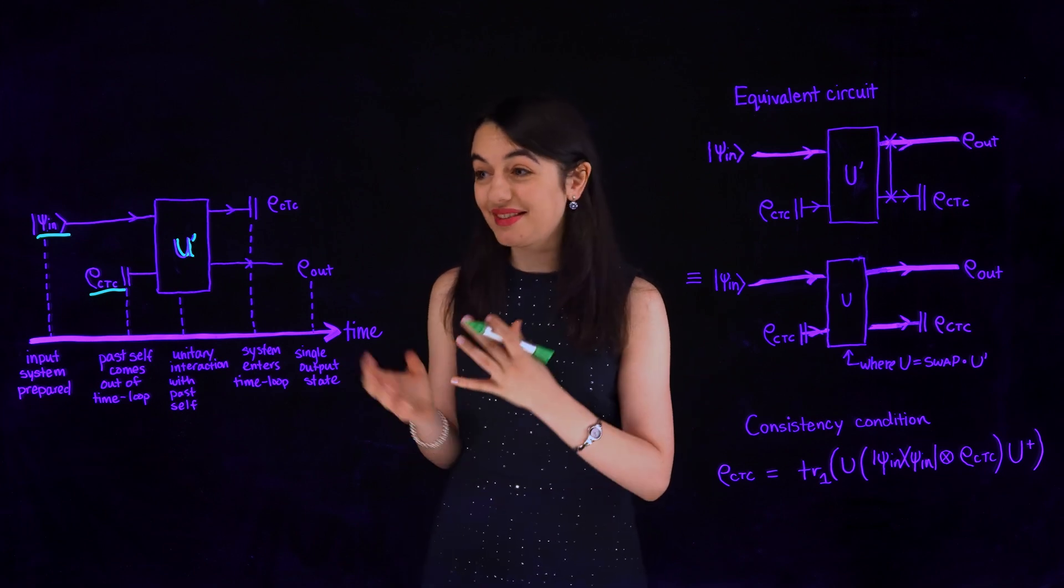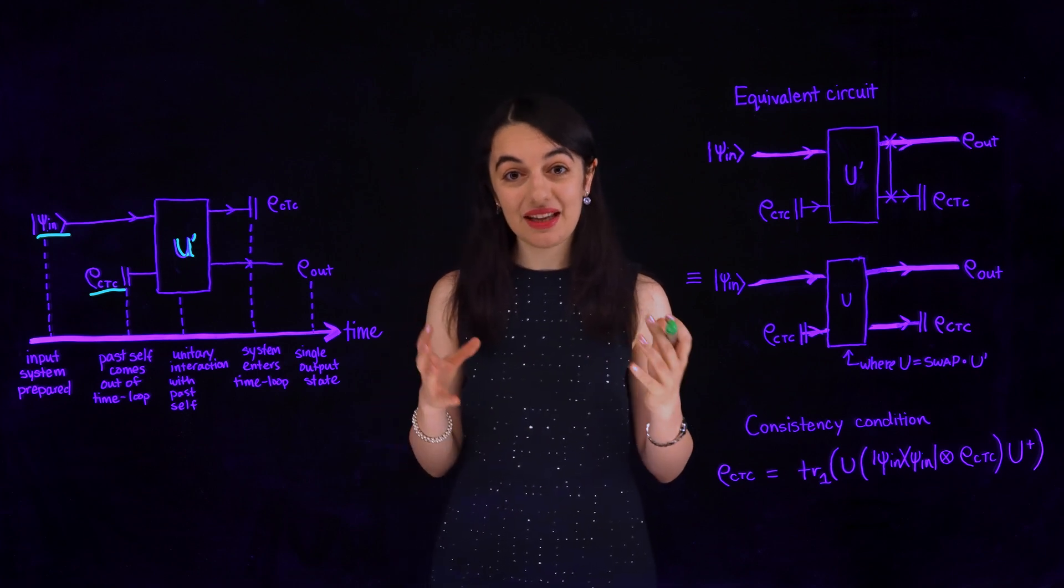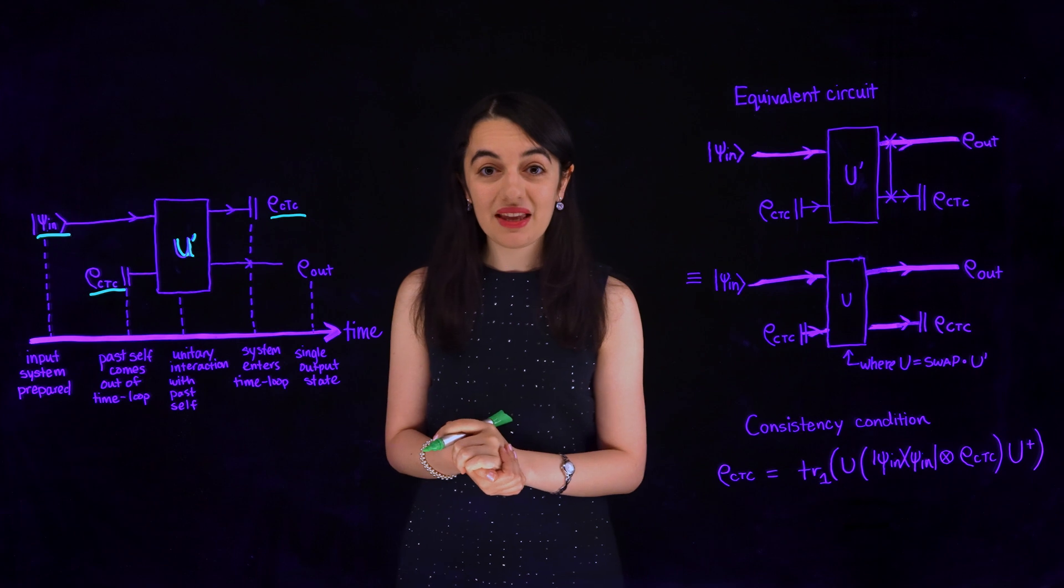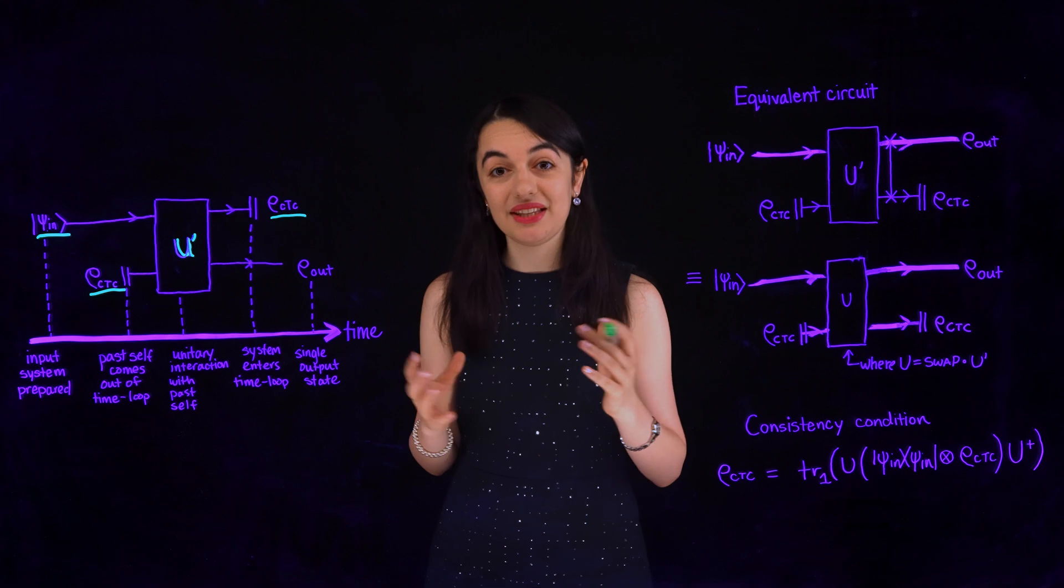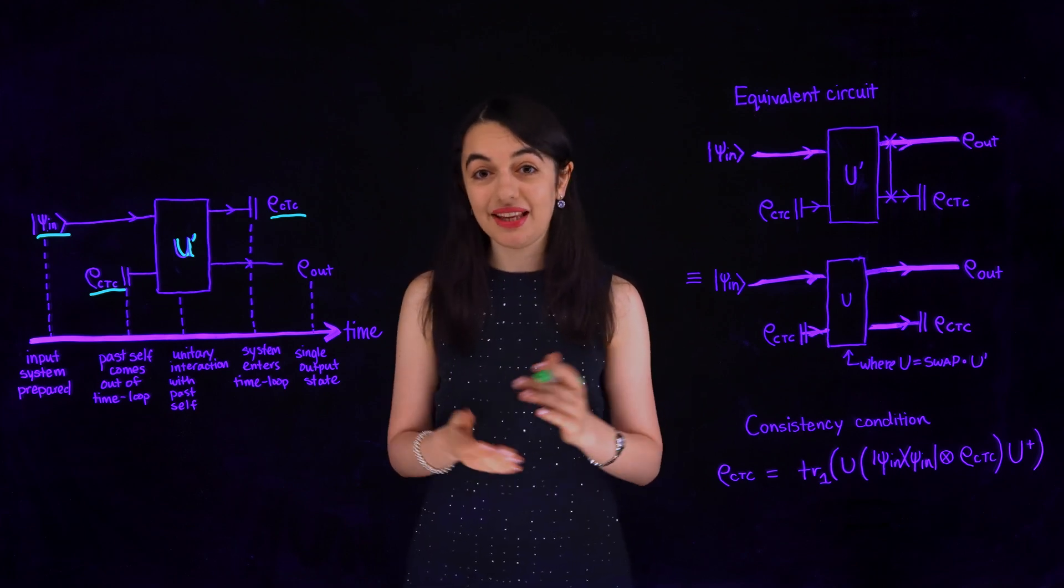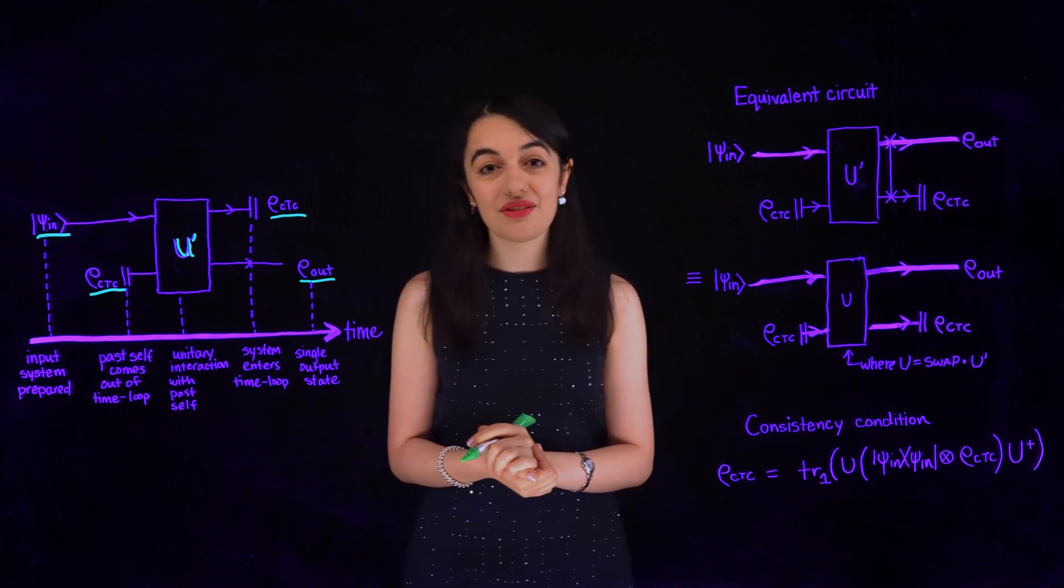After that, my original self enters the time machine. To avoid paradoxes, I must enter the time machine in the same state that I leave the time machine. So, my state as I enter the time machine must also be ρ_ctc. My other self stayed and continued with the video, and I have labelled her final state as ρ_out.